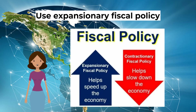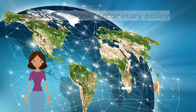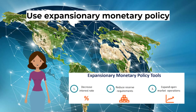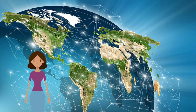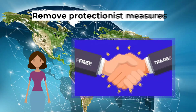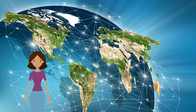Use expansionary fiscal policy: increasing public expenditure and cutting taxes can boost total demand in an economy for imported goods and services. Use expansionary monetary policy: lower interest rates will make borrowing from banks cheaper and increase the incentive to spend, encouraging consumers to spend on imports and correct the trade surplus. Remove protectionist measures: reducing tariffs and quotas causes imports to rise and closes a surplus in the current account.